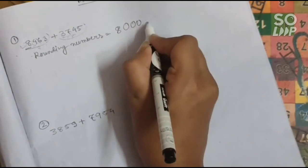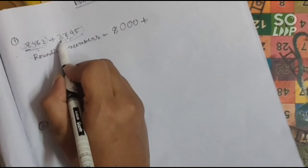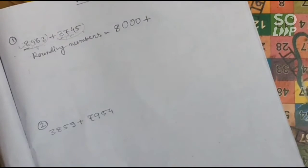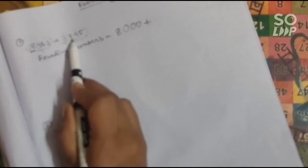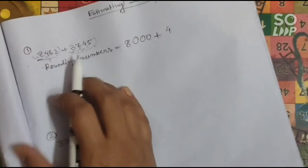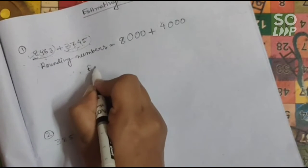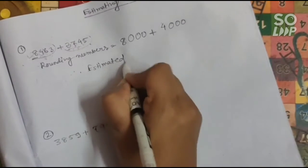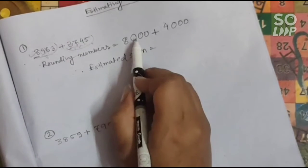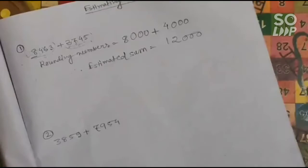After 8 there are 3 digits, so we place 3 zeros: 8000. For 3745, the thousand digit is 3. The next digit is 7, which is greater than 5, so we add 1 to 3. That gives 4, and after 3 there are 3 digits, so we place 3 zeros: 4000. The estimated sum is 8000 plus 4000, which equals 12,000. That is how you find the estimated sum.